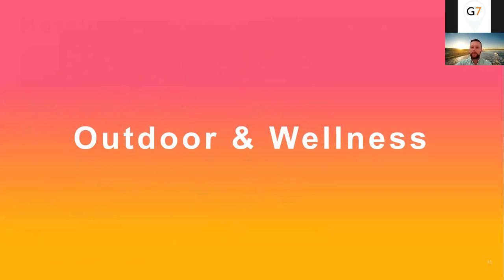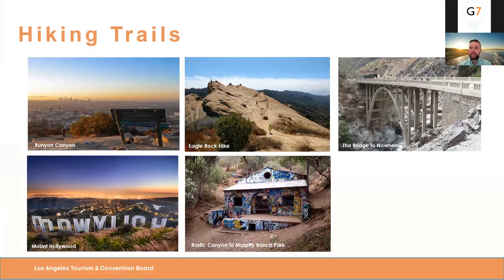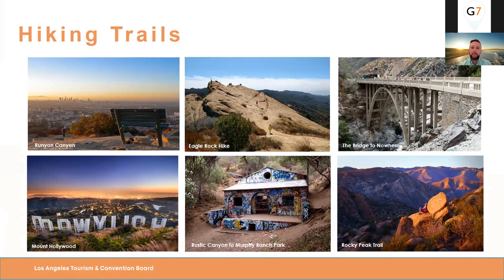Outdoors and wellness is something people will definitely be looking for when we return to travel. LA is surrounded by amazing mountain and hill ranges such as the San Bernardino and Santa Monica Mountains. We have a range of amazing hikes from really easy — like the famous Runyon Canyon, a great place to spot a celebrity or paparazzi — to more endurance hikes such as the Rocky Peak Trail and the Bridge to Nowhere. There's also Rustic Canyon, which you might recognise from Police Academy, and Mount Hollywood, where you can get pretty close to the back of the Hollywood sign.